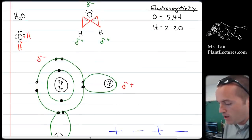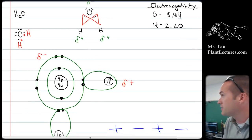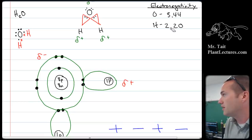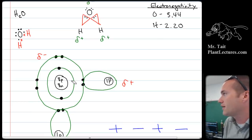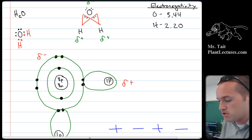We said that the reason why water is so polar is because oxygen has a really high electronegativity and hydrogen has a really low electronegativity, which means that the oxygen steals away all the electrons from the hydrogen, and that means that the hydrogen becomes partially positive and the oxygen becomes partially negative.